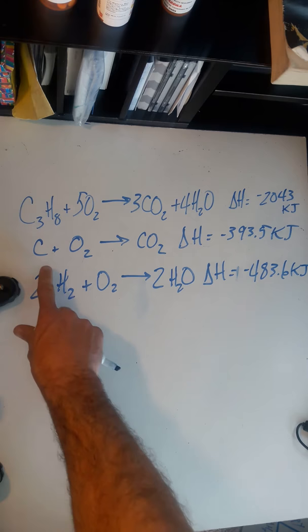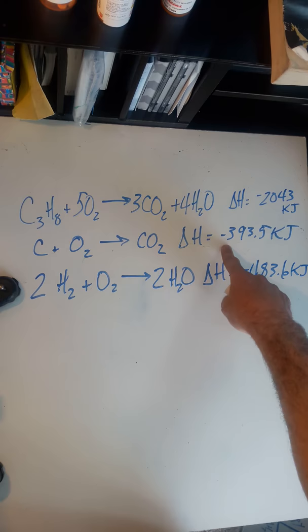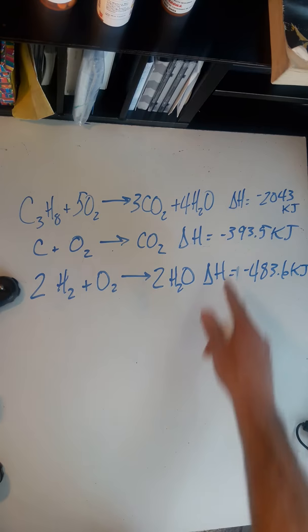The next reaction is carbon plus oxygen yields carbon dioxide gas. This gives off negative 393.5 kilojoules. It's negative because it's giving it off. And then here's the synthesis of hydrogen gas plus oxygen gas, two moles of hydrogen, one mole of oxygen to give two moles of water.